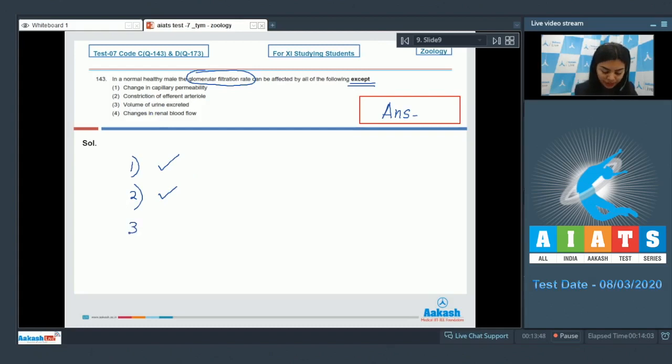Option 3, volume of urine excreted, is decided after the glomerular filtration, so it will not affect the rate of glomerular filtration. Option 4, changes in renal blood flow, would also affect the GFR. Only option 3, volume of urine excreted, will not affect the glomerular filtration rate. That is our right answer, option number 3.